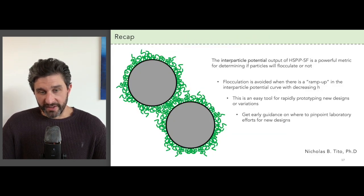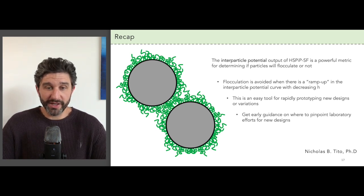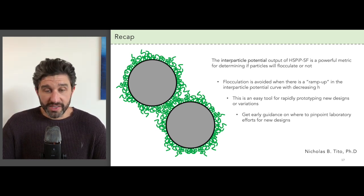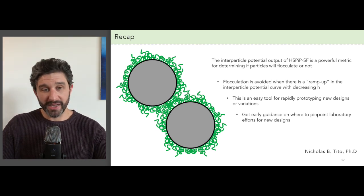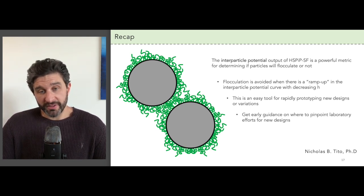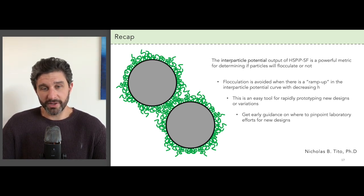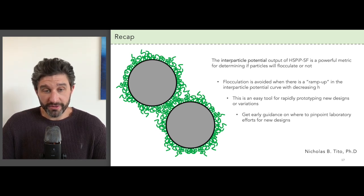So let's recap. The purpose of this case study was to introduce the power of interparticle potential, an HSPIP output that is really useful for determining if particles in a formulation will flocculate. Fundamentally, flocculation is mitigated when there is a clear ramp up leading to a hump as you decrease the distance between the two particles — this is the polymer micro-pillowing effect in action. This output makes HSPIP useful for quickly prototyping new designs or variations on your formulation. The same approach can be used for any kind of polymer architecture and any kind of chemical design parameters within the app. This lets you get really early guidance on where to pinpoint your laboratory efforts, sample a broad range of parameters, try some prototyping, and isolate the most promising combinations before you begin work in the laboratory.